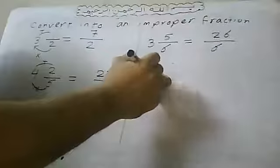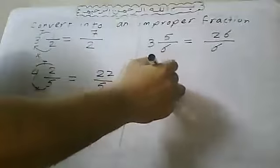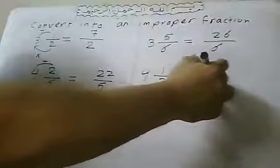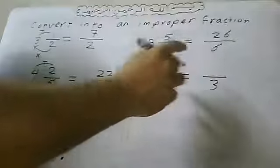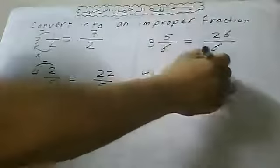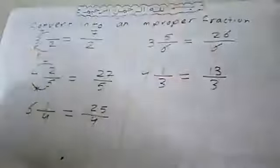Another example: four and one over three. First write three, then three times four equals twelve. Twelve plus one equals thirteen. So the answer is thirteen over three.